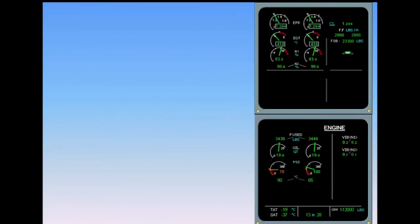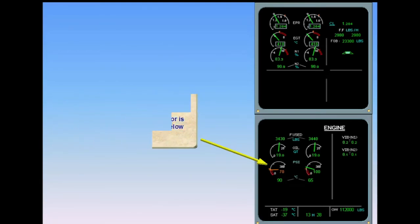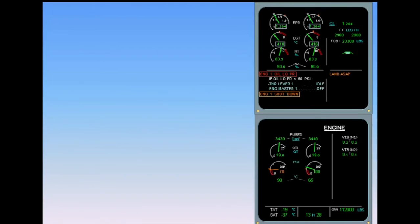The aircraft is in cruise. The ECAM engine page has been displayed. The number one engine oil pressure indicator is amber because the oil pressure is below the normal range. The situation has now degraded to a level three warning. The red warning and associated checklist are displayed on the engine warning display, and the ECAM engine page is automatically displayed with the number one engine oil pressure indicator now shown in red.